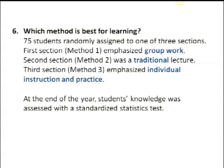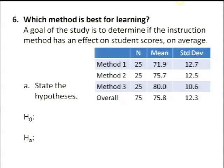We have two more problems—six and seven, the longer ones. Number 6: three different teaching methods—group work, traditional lecture, or individual instruction with practice. A test is given at the end; scores will be compared. We want to study if the instruction method had an effect on scores. Looking at the output, you can tell it's a one-way ANOVA. Why? The response is quantitative scores, and there are three different populations or teaching methods. The response variable is the score on the test; the explanatory variable is which method was used.